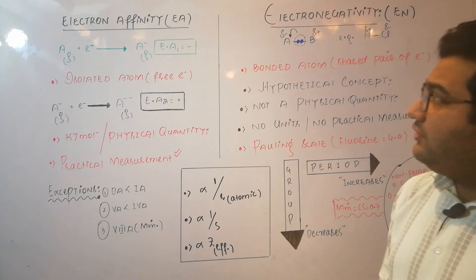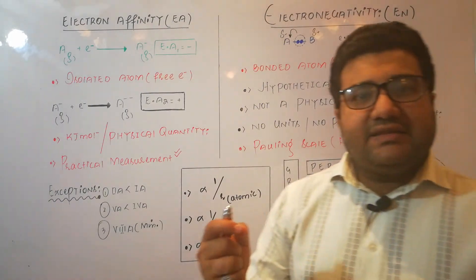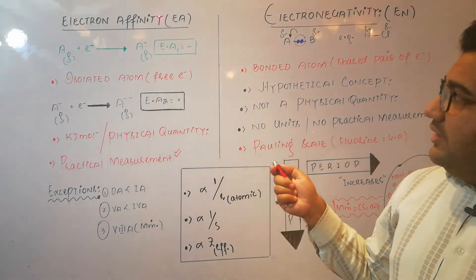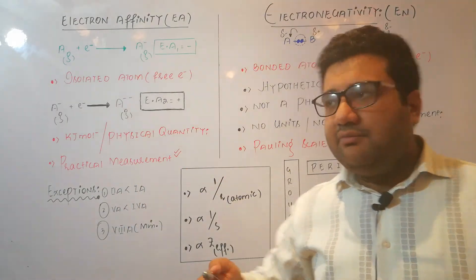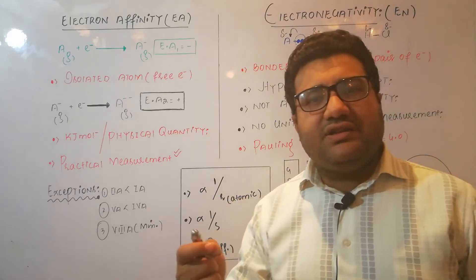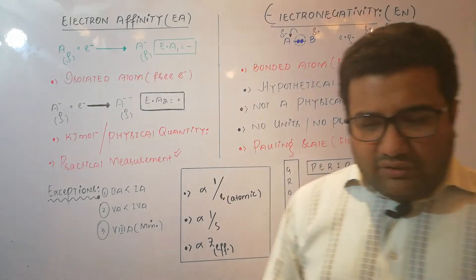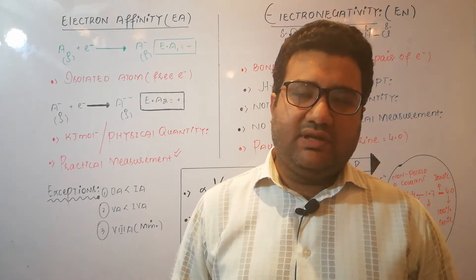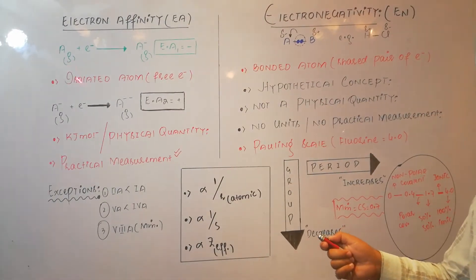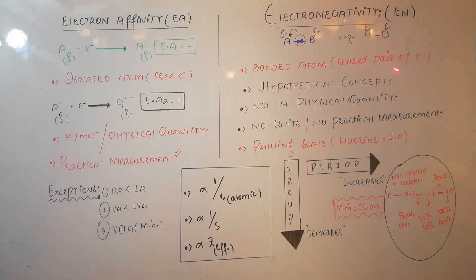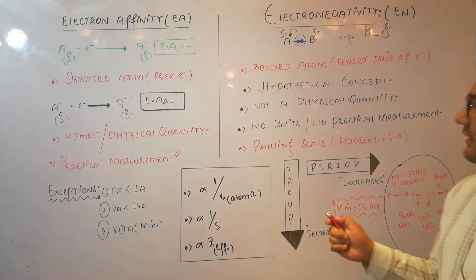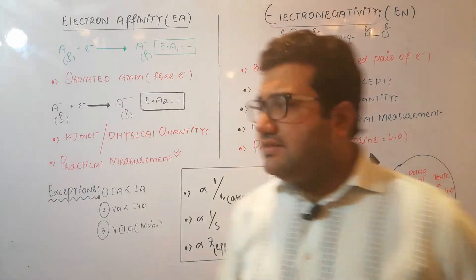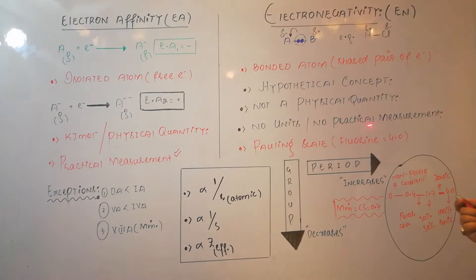Electron affinity is a property of an isolated atom, but electronegativity is a property of a covalently bonded atom. In electron affinity, the atom attracts free electrons towards itself, while in electronegativity the atom attracts the shared pair of electrons. To study electron affinity, the atom must be isolated; to study electronegativity, the atom must be covalently bonded to another atom. Electronegativity is a hypothetical, theoretical concept.